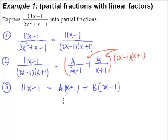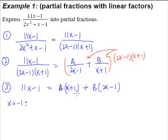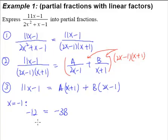As learned in identities in the Remainder Factor Theorem chapter, to solve for B we need to eliminate A. We substitute x equals negative 1, because then (negative 1 plus 1) equals 0, and 0 times A eliminates A. Substituting: negative 11 minus 1 gives negative 12, and (2 times negative 1 minus 1) gives negative 3, so we get negative 12 equals negative 3B, and therefore B equals 4.